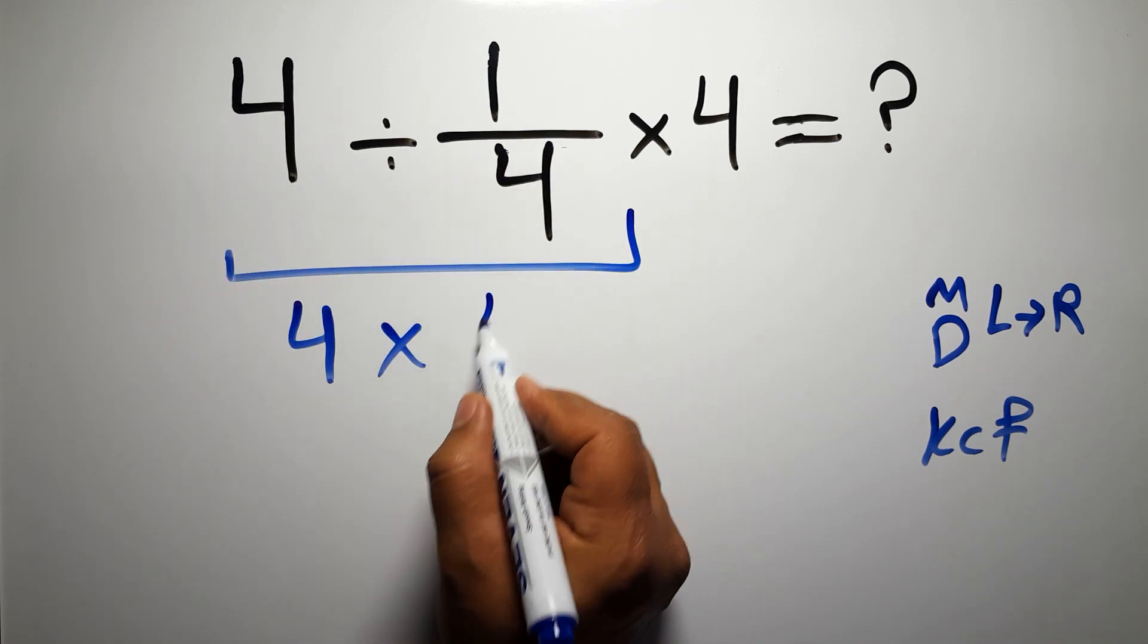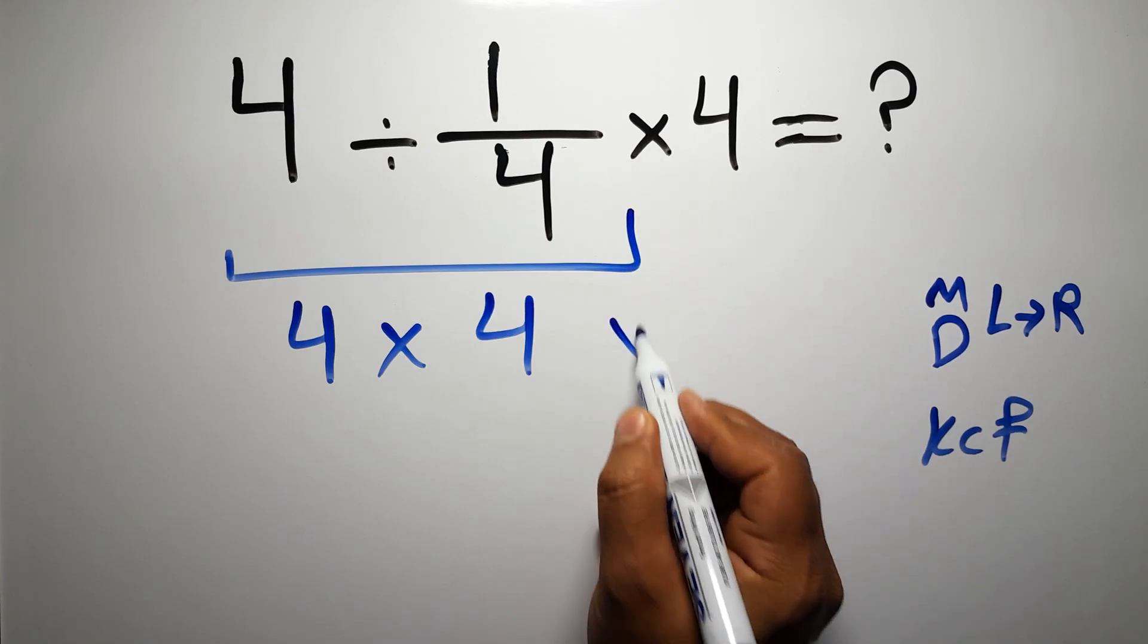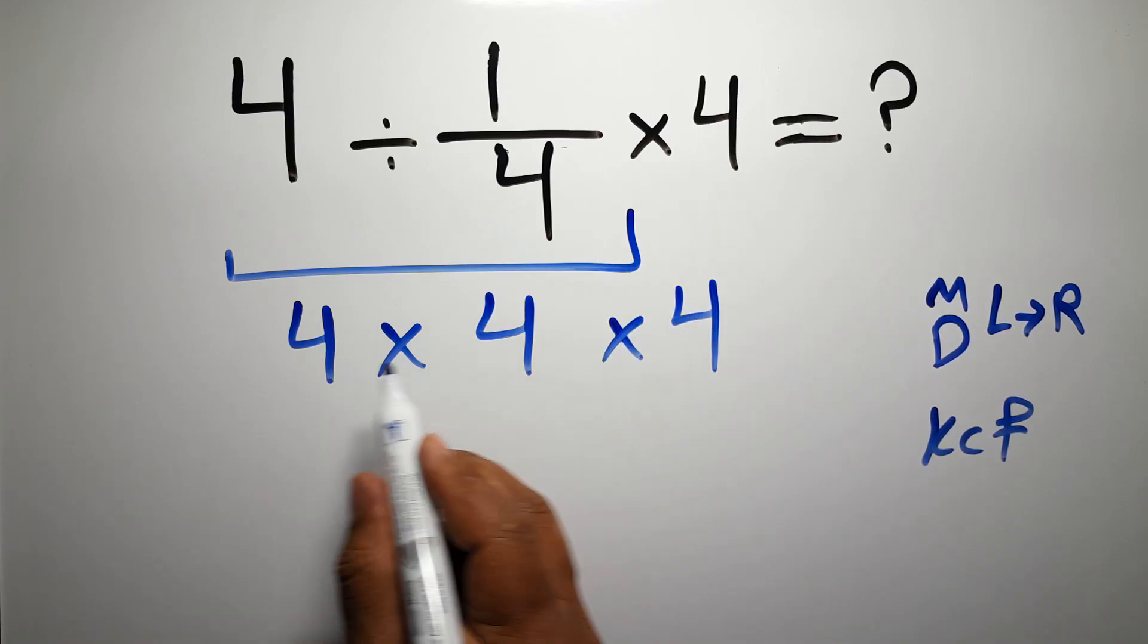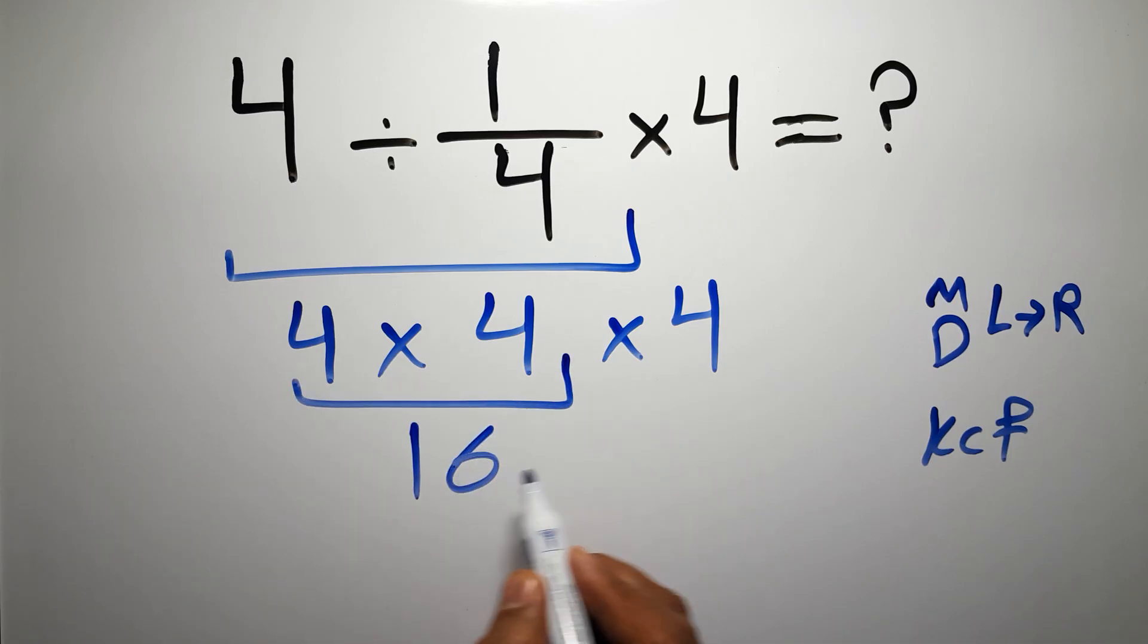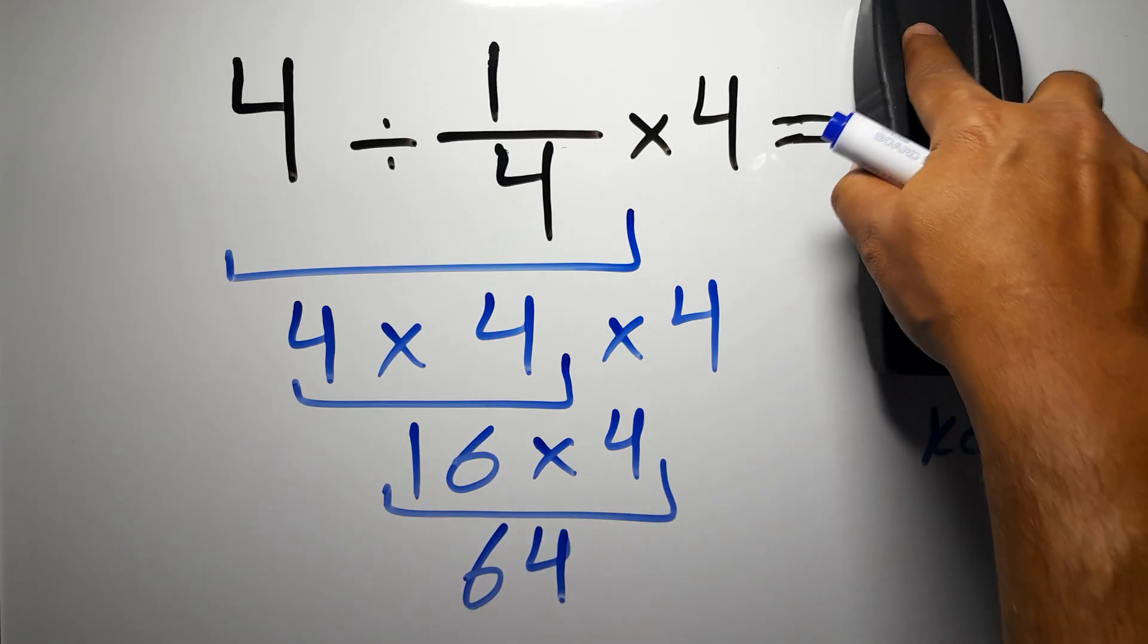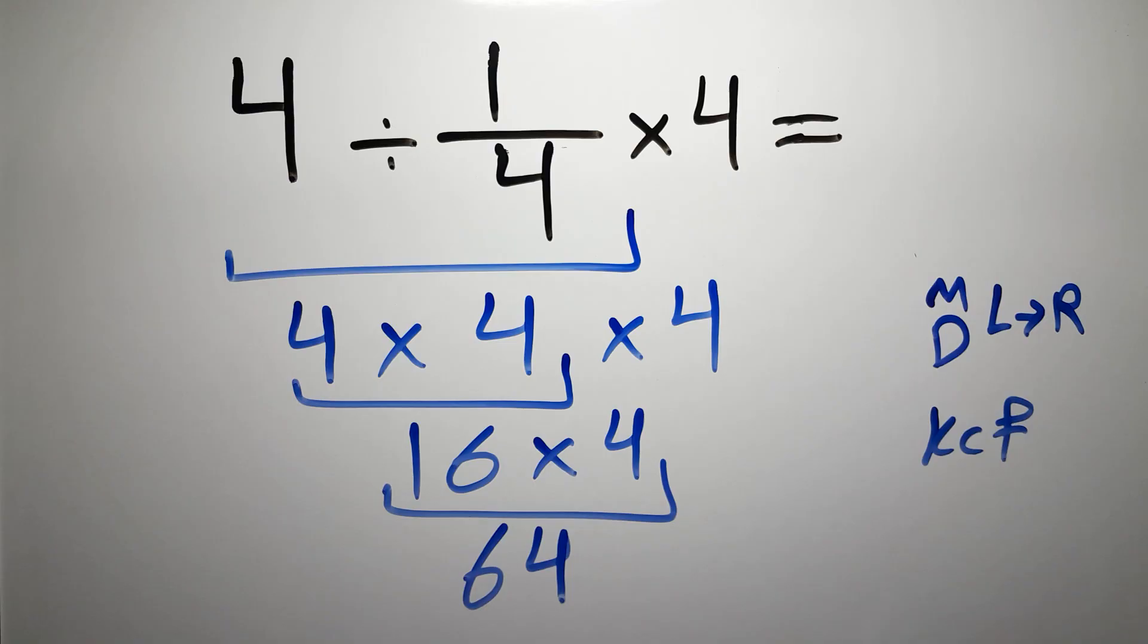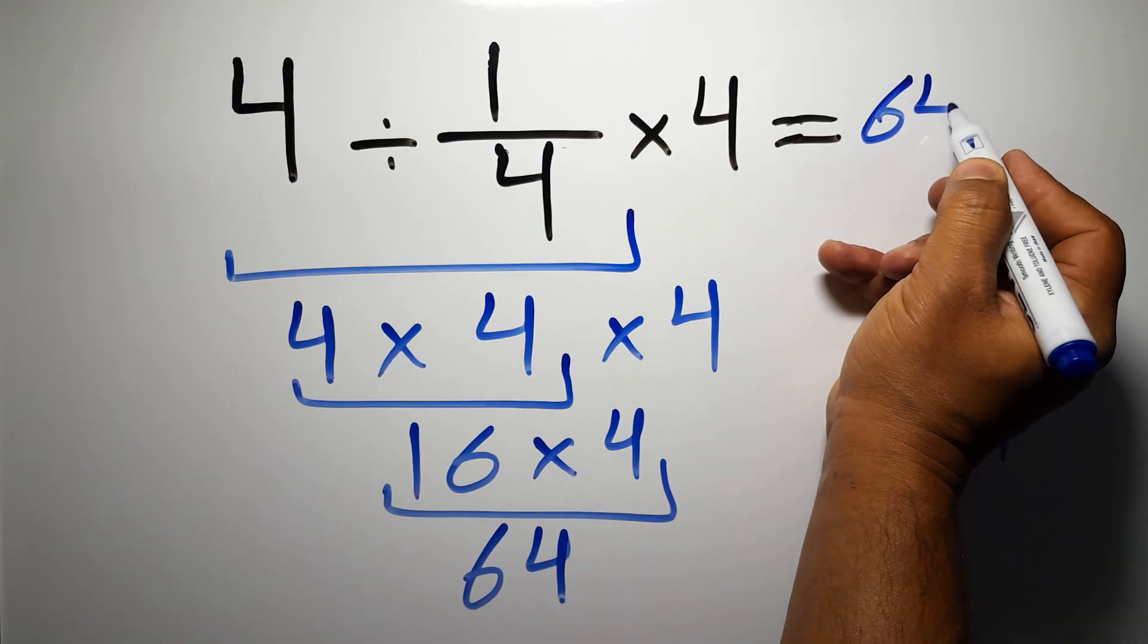And flip the second fraction. And again here we have times 4, so 4 times 4 times 4. 4 times 4 gives us 16, and 16 times 4 is 64. This is our final answer to this problem. The correct answer is 64.